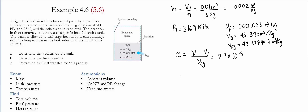Doing an energy balance, the amount of energy in minus the amount of energy out equals the change of internal energy, since it's a closed system. There is no work leaving the system, only heat going in, so the heat going in equals the change in energy, which is equal to the mass times the change of internal energy U2 minus U1. We then go to the tables to find the values of U2 and U1.